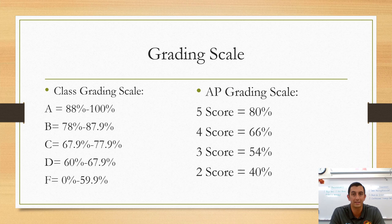For the AP grading scale based on course points available: a score of 5 requires 80% of available points, a score of 4 requires 66%, and a score of 3 — the minimum passing score — requires 54% of available points.